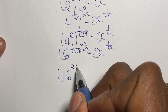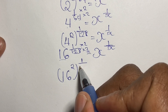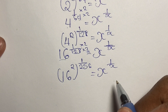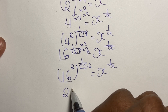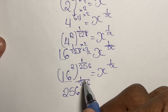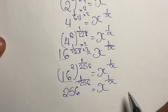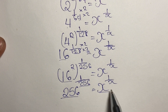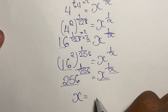We raise 16 to the power of 2 in brackets, powered by 1 over 256, giving us 16 squared to the power of 1 over 256. 16 squared gives us 256, so we have 256 to the power of 1 over 256 equal to x to the power of 1 over x. The base is 256 and the denominator of the exponent is also 256, matching the form of x to the power of 1 over x.